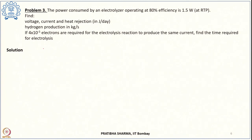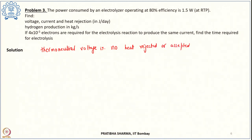Considering the thermoneutral voltage — the state where there is no heat rejection or acceptance — the cell voltage is given by 1.48 divided by the efficiency. With efficiency 80% (0.8), the voltage comes out to be 1.85 volt. That is the voltage required.